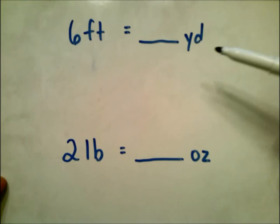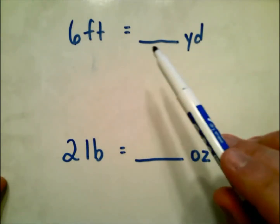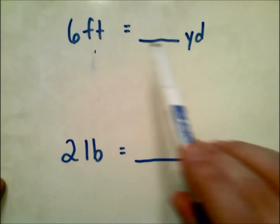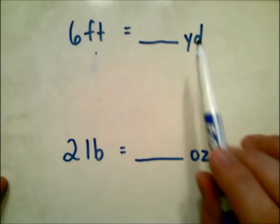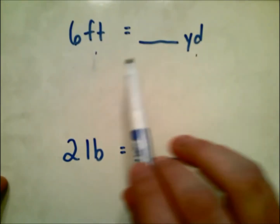In this example we have 6 ft equals blank yards. We're going from feet to yards. I always ask the question: are we going from a larger to a smaller, or a smaller to a larger? Well, I know that feet are smaller than yards, so here we're going from a smaller unit to a larger unit.